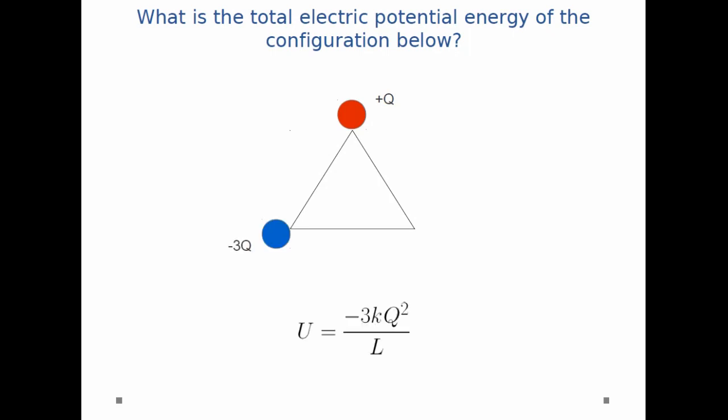When I move the second point charge on, it interacts with the first point charge. So the potential energy is just equal to minus 3kQ squared divided by L. That just comes from the expression k times the charge plus Q times the charge minus 3Q divided by the distance between them, L.